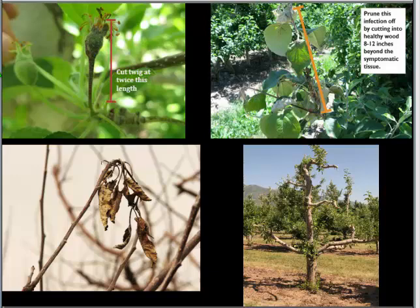When fire blight gets really bad, you may end up with what's called the ugly tree syndrome. A tree may be stub cut but was too far gone, and the tree may need to be removed altogether.